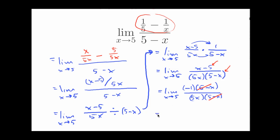All right, so now look what I have. I have the limit as x goes to five of negative one over 5x. And this I can evaluate by direct substitution. This is going to be negative one over five times five, which is negative one twenty-fifths. There's my answer there.